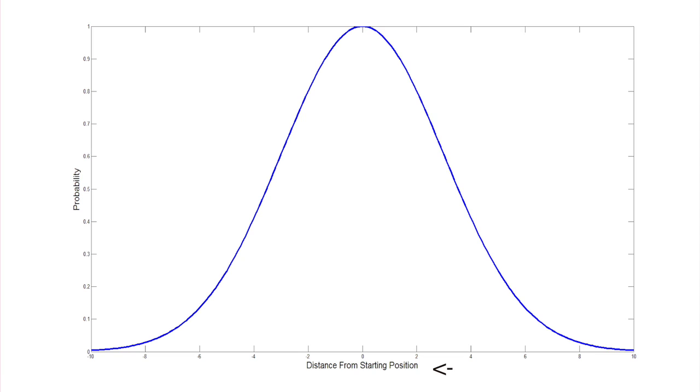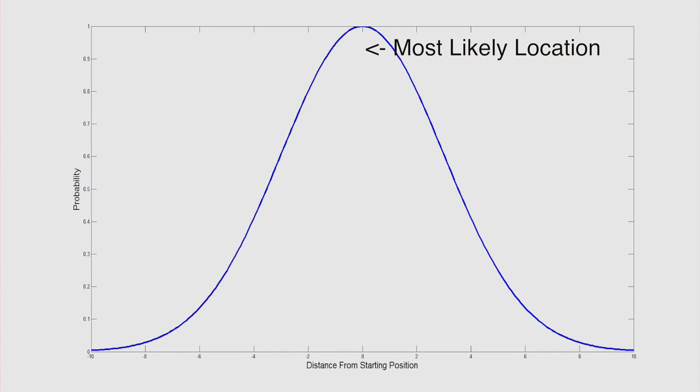The x-axis is the distance from the starting point, and the y-axis is the probability of finding the particle at this distance. The key feature that a Gaussian has is that the most probable place to find a particle from its starting position is its starting position.